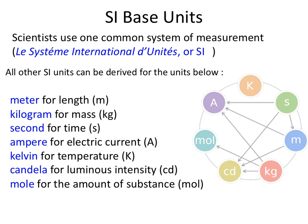There are interrelationships between each of these base units that we'll look at later. For right now, these base units represent different types of measurements: the meter is used for length, the kilogram for mass, the second for time, the ampere for current, kelvin for temperature, candela for luminous intensity, and the mole for amount of substance. Each one has an abbreviation — for example, 25m means 25 meters, or 3.23 kilograms represents a mass.